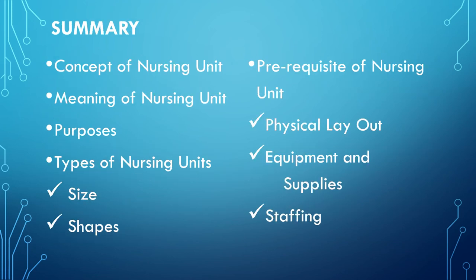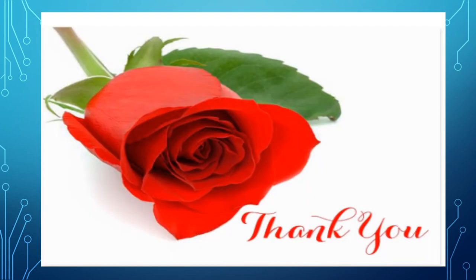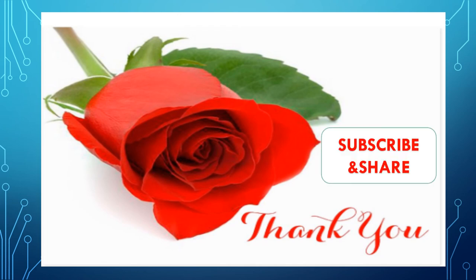In summary, this video covered the concept, meaning, and five purposes of a nursing unit, the different types according to size and shape — 11 or 12 designs — and the prerequisites including physical layout, equipment and supplies, and staffing. Thanks for watching and patient listening; please subscribe and share.